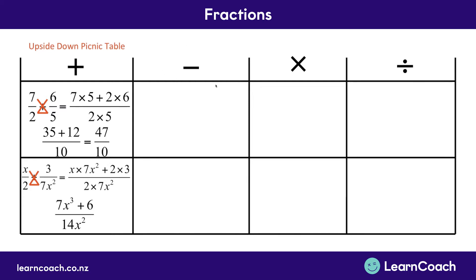Looking at subtraction now, it's the exact same thing, except instead of having a plus in between the fractions at the top, we're going to have a minus. So again, we're going to use our upside-down picnic table technique. In this example, we're going to have the 10 bringing across and multiplied by the 1, we're going to have the 7 multiplied by the 3, and we're going to have the 10 and the 7 multiplied together on the bottom of the fraction. Simplifying this out, we have our 3 times 7, minus — which comes from the middle — the 10 times 1, and all divided by 10 times 7 across the bottom.